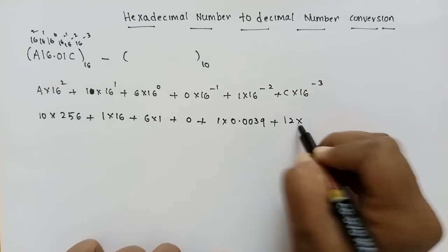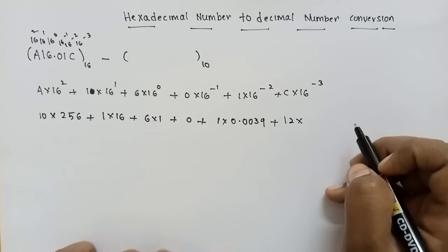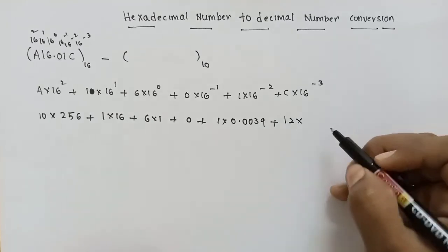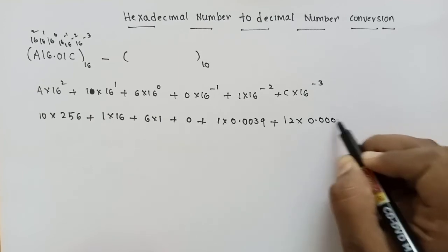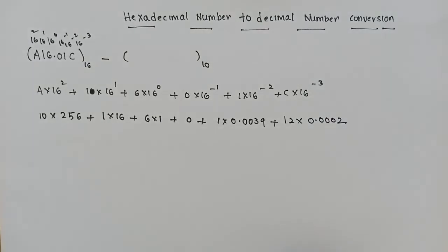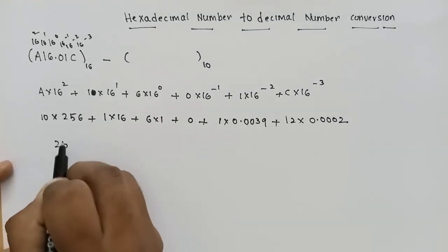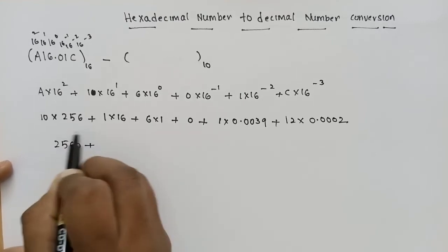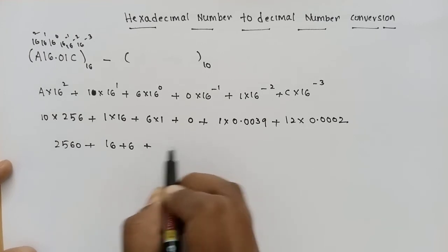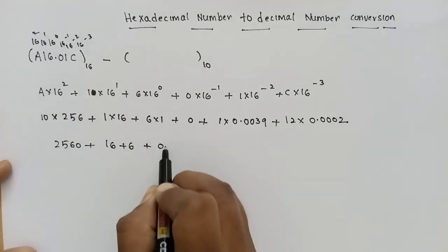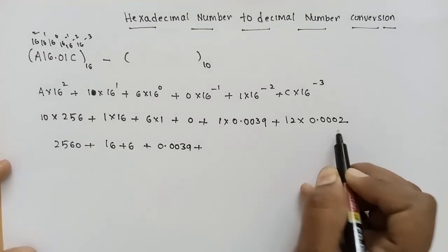So 12 into 16 into 16, which is 256 into 16. That gives 1 by 4096, approximately 0.002. Okay, calculate this. Simplifying: 256 into 10, plus 16, plus 6, plus 0. Then 1 into 0.0039, plus 12 into 0.002.